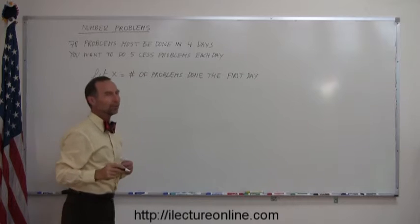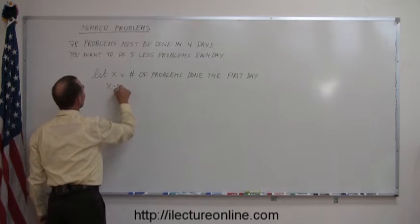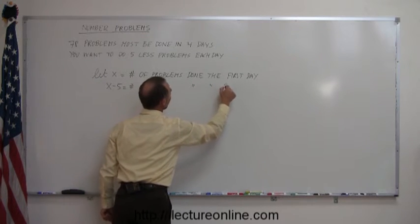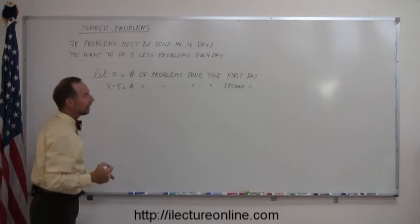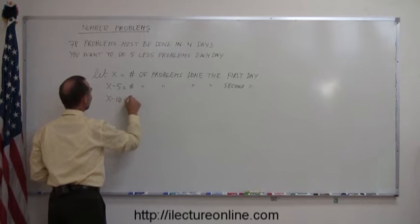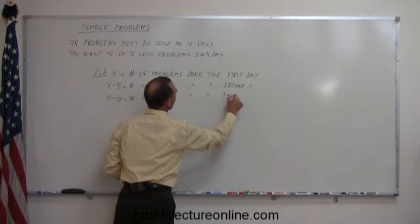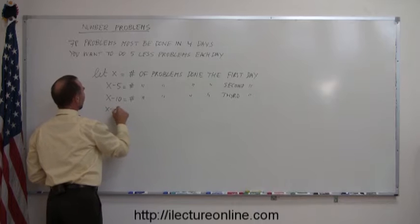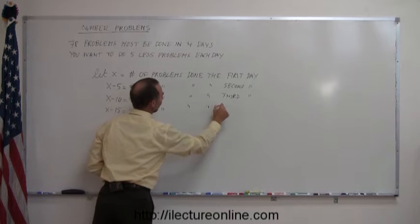Then how many problems do you do the second day? Well, if it's 5 less, then x minus 5 equals the number of problems done the second day. And then the next day you do 5 less again, so x minus 10 equal the number of problems done the third day. And finally, x minus 15 equal the number of problems done the fourth day.